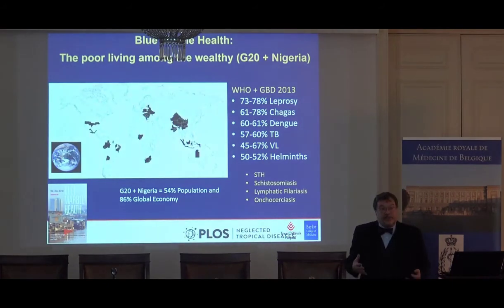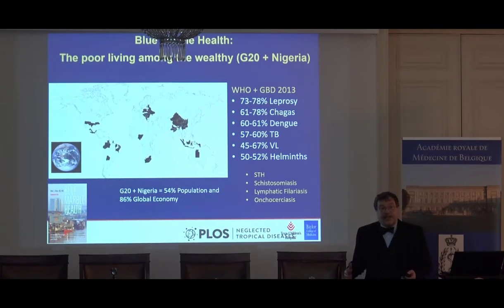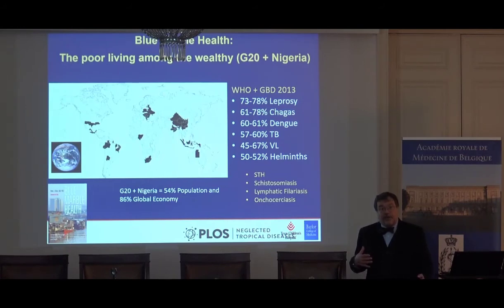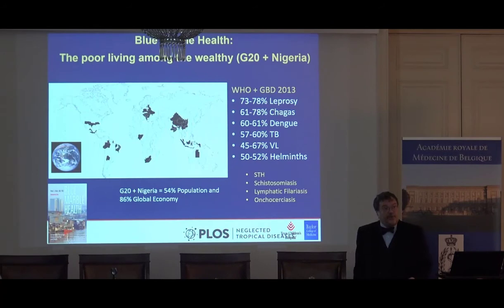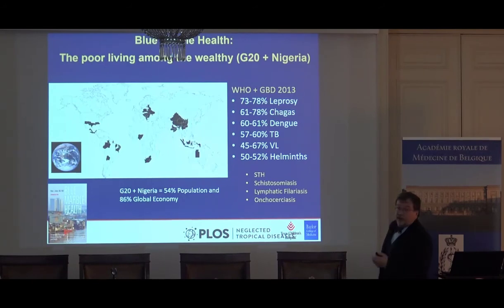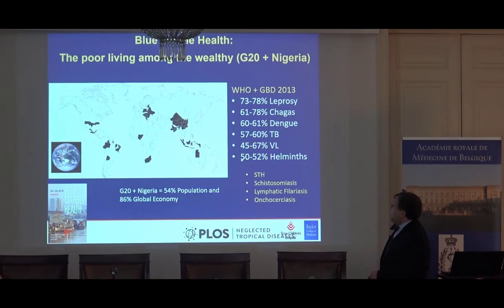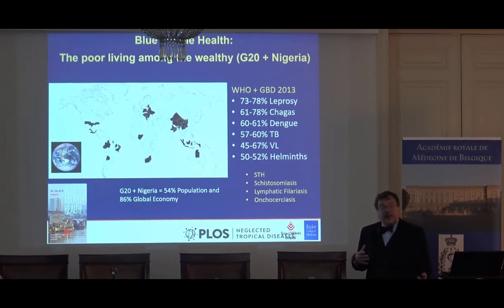The other big driver is the shifting nature of poverty, which I discuss in a book called 'Blue Marble Health.' We've made great progress reducing poverty and disease through the Millennium Development Goals, but we're seeing a new problem: it's the poor living among the wealthier — the poorest of the rich — who now account for most of the world's neglected tropical diseases. The G20 countries, together with Nigeria, now account for at least half the world's helminth infections, leishmaniasis, tuberculosis, dengue, Chagas disease, and leprosy.